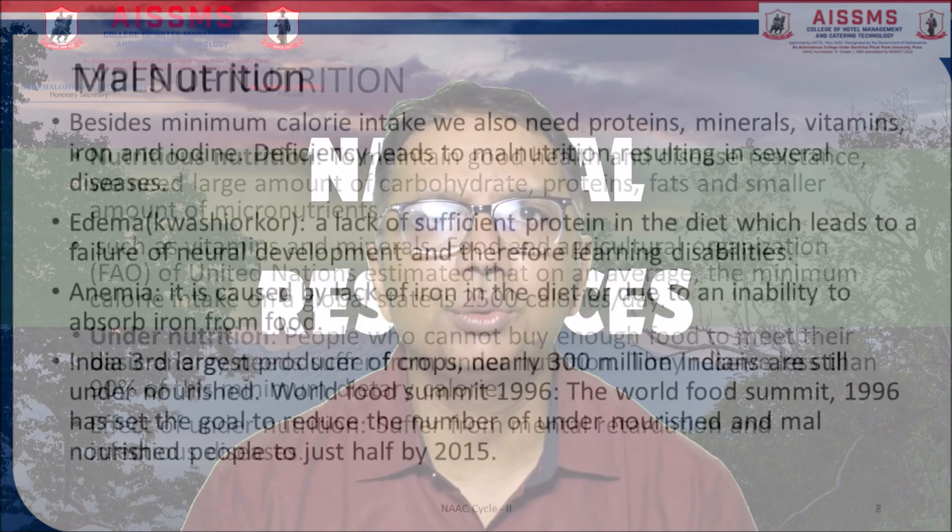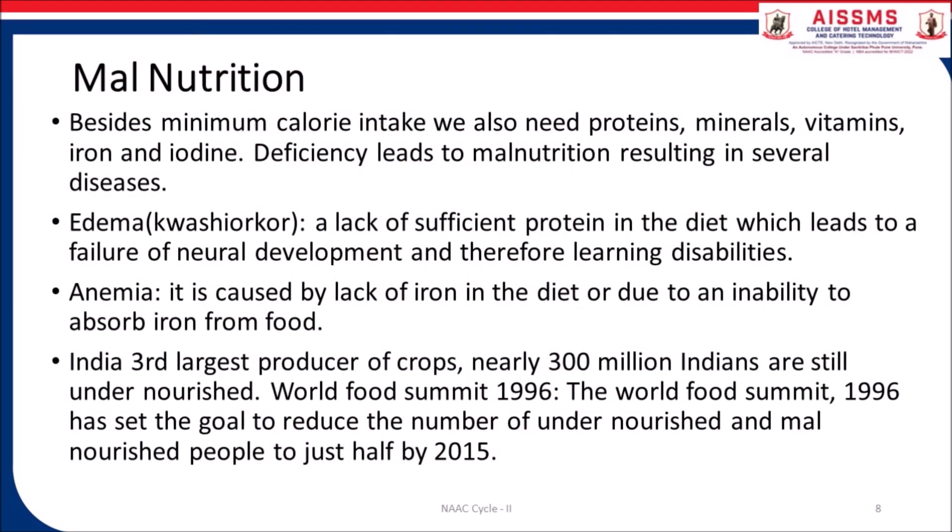Let us understand what is malnutrition. Besides minimum calorie intake, we also need protein, minerals, vitamin, iron and iodine. Deficiencies lead to malnutrition resulting in several diseases. First, edema — a lack of sufficient protein in the diet which leads to a failure of neural development and therefore learning disabilities. Second, anemia — it is caused by lack of iron in the diet or due to an inability to absorb iron from food.